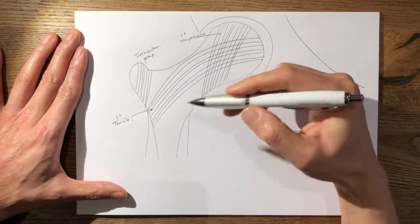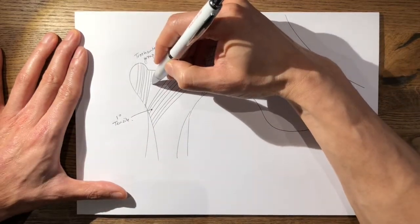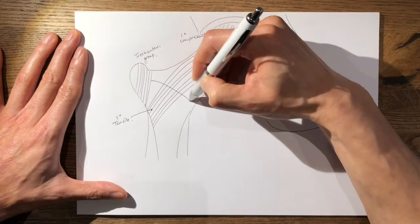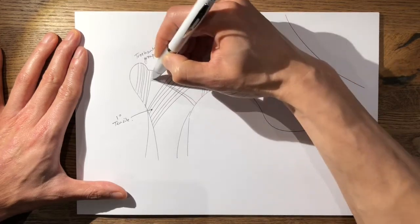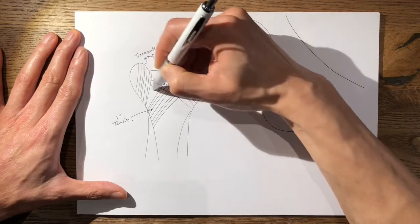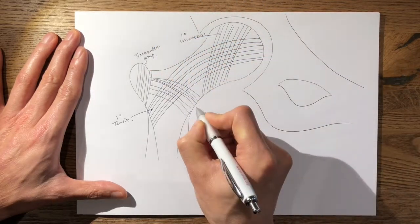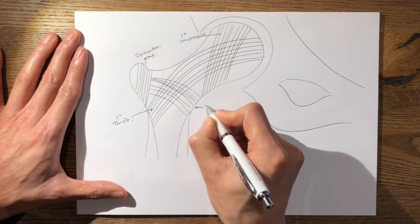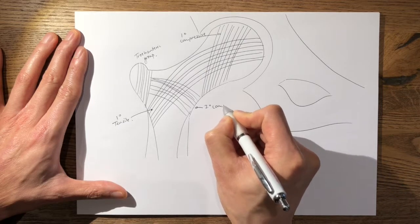Now your secondary compressive group comes from here and arcs across like this. So that's your secondary compressive group.